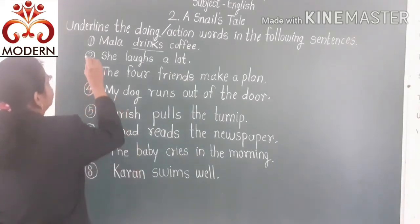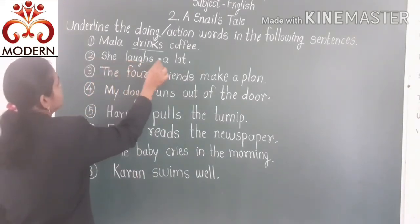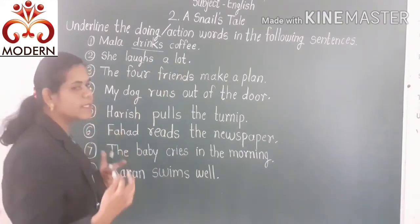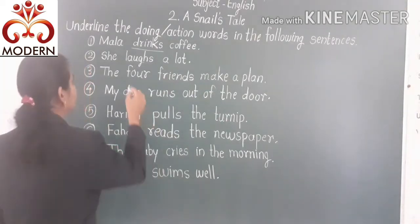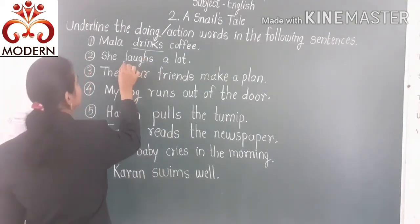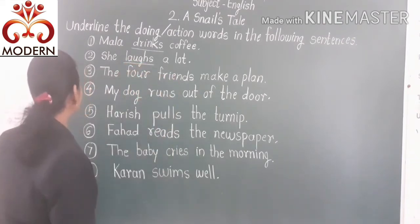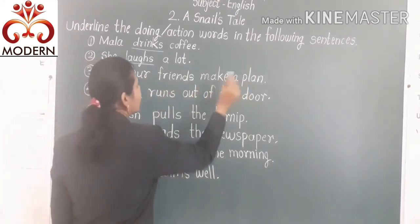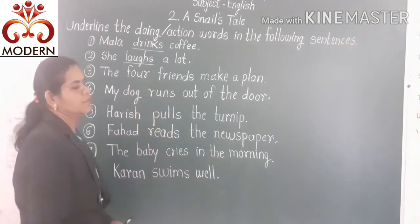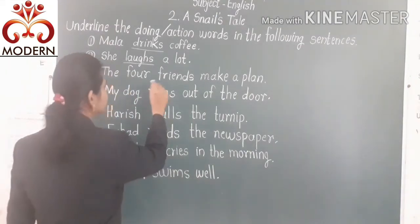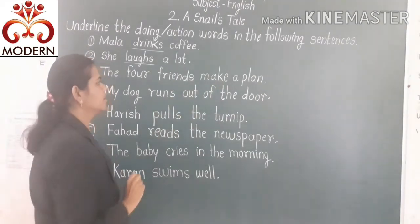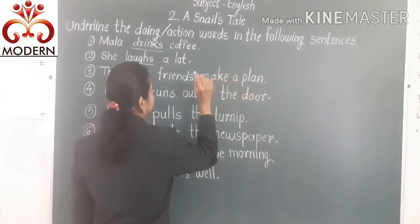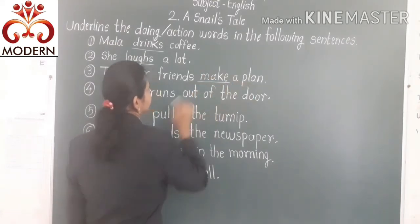Then the next sentence is: She laughs a lot. 'Laughs' is the doing word, so underline it. Then the next sentence is: The four friends make a plan. 'Make' is the action word, so underline it.